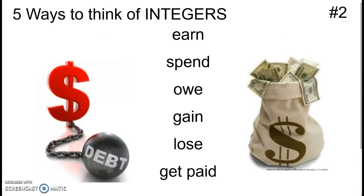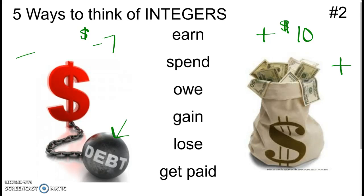The next way is money. If you earn money — say you earn $10 — that's positive money that you get to keep, so earning money is like a positive integer. Spending money, like if you go to the mall and spend $7 on lunch, is like negative money. If you owe money or are in debt, those would all be negative integers. If you gain money or get paid, those are positive integers. Money might be a good way to think about integers when you come across story problems.